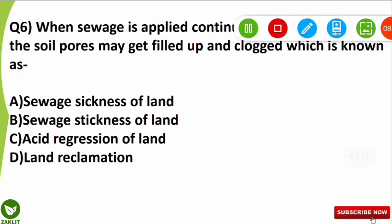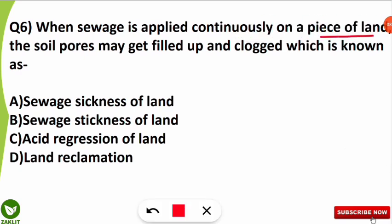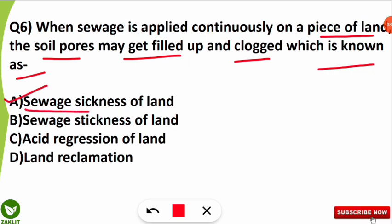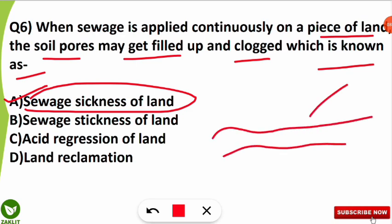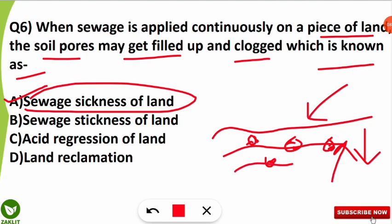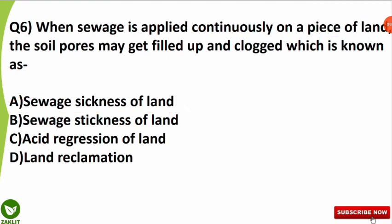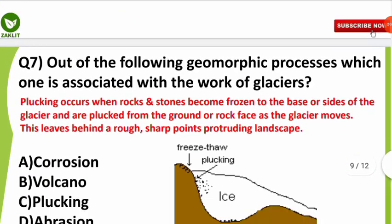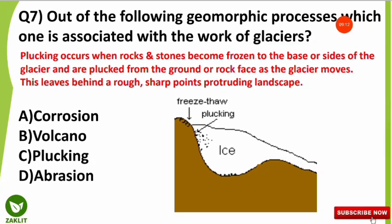The sixth question is from solid waste management: when sewage is applied continuously on a piece of land, the soil pores may get filled up and clogged — what kind of process is this? The correct option is sewage sickness of the land. When sewage is continuously poured onto land, the pores inside the soil get clogged and blocked, oxygen cannot move through the soil, and the soil deteriorates — this is known as sewage sickness of the land.